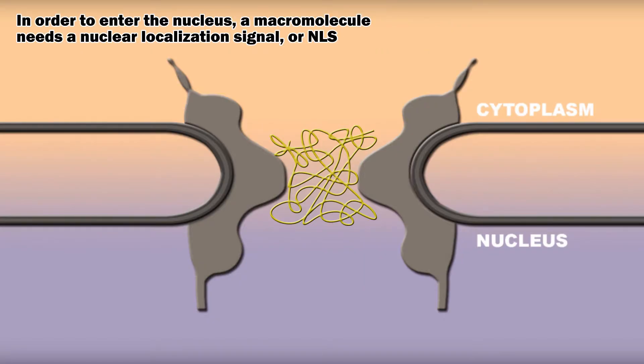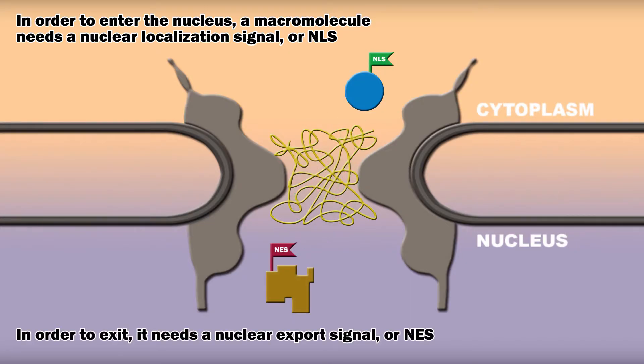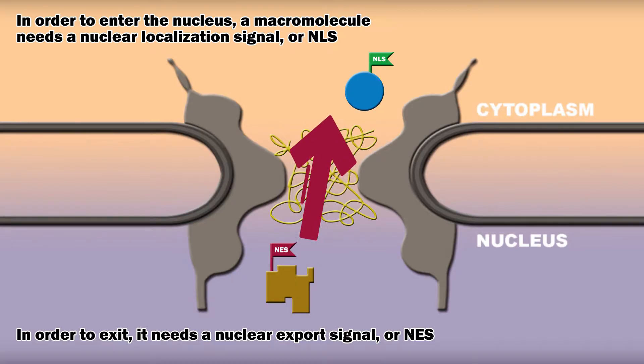In order to enter the nucleus, a macromolecule needs a nuclear localization signal, or NLS, and in order to exit, it needs a nuclear export signal, or NES.